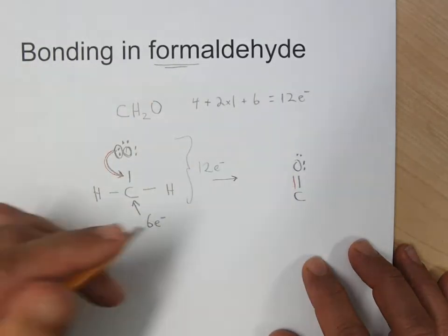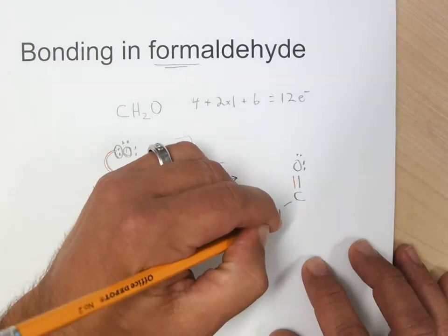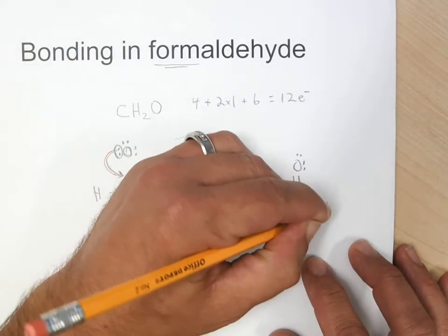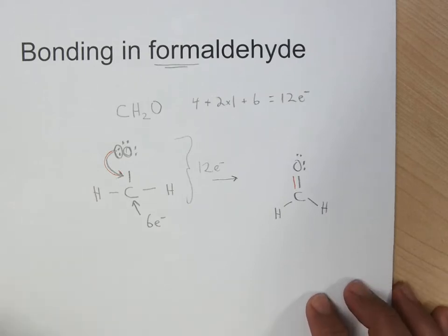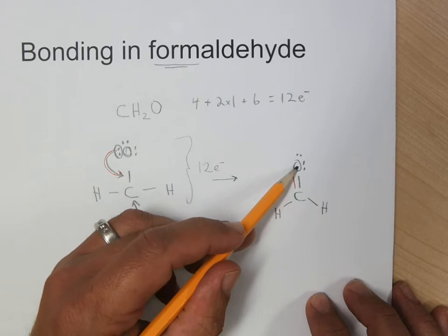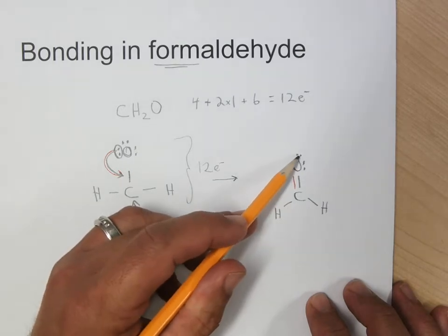So now we have a multiple bond between the carbon and the oxygen. Single bonds between the carbon and the hydrogen. We've used all twelve electrons, and every atom that can have an octet has an octet.